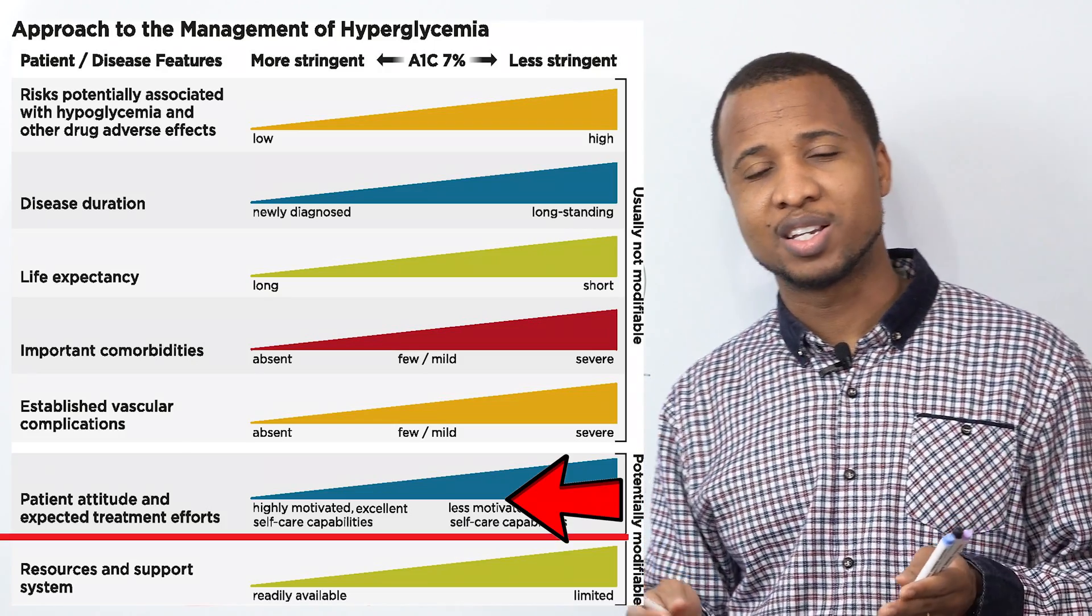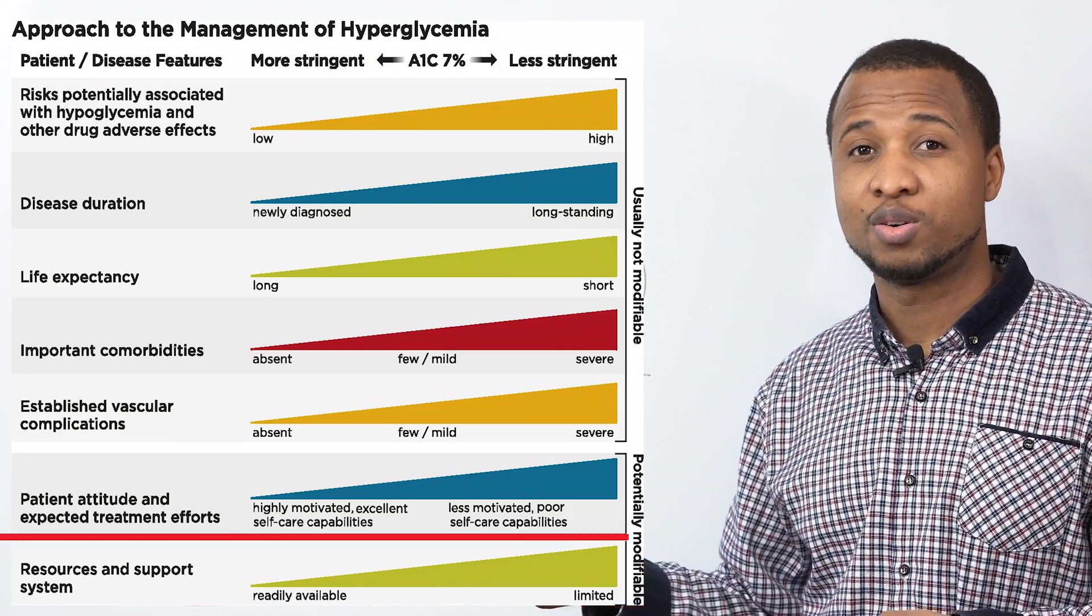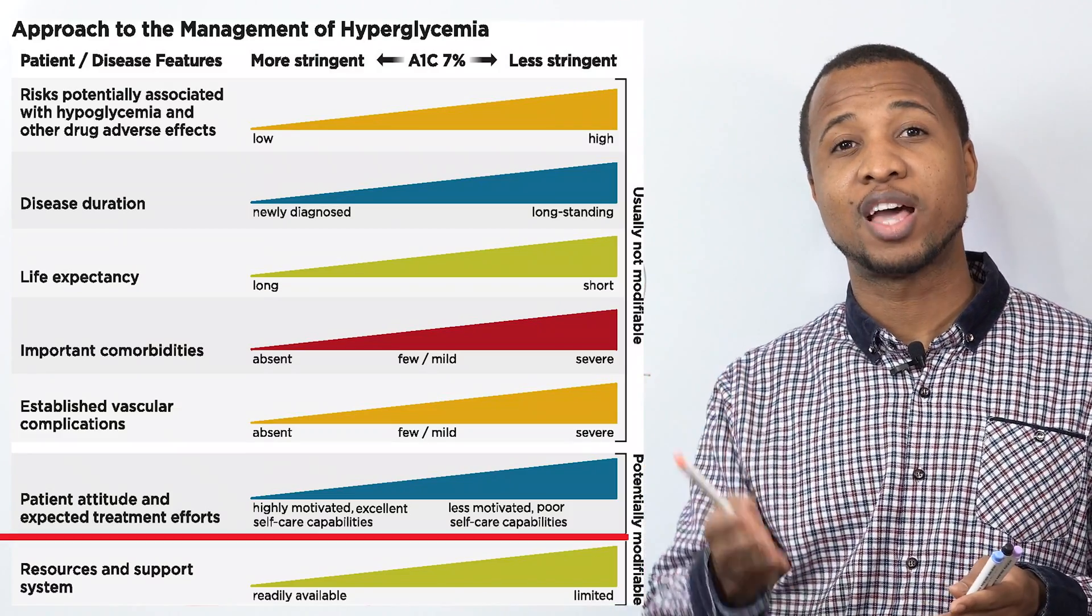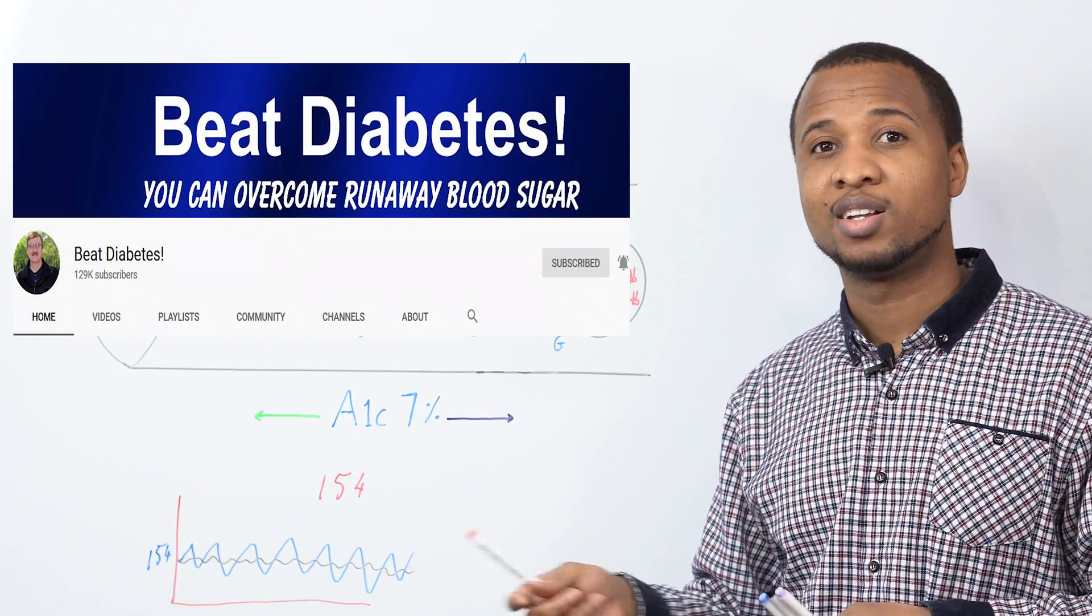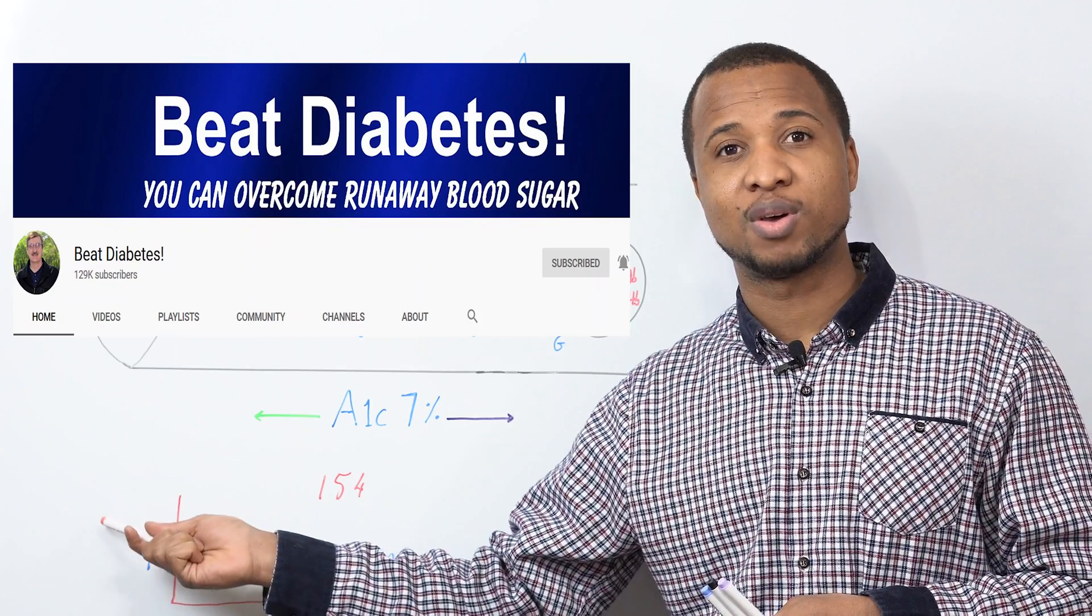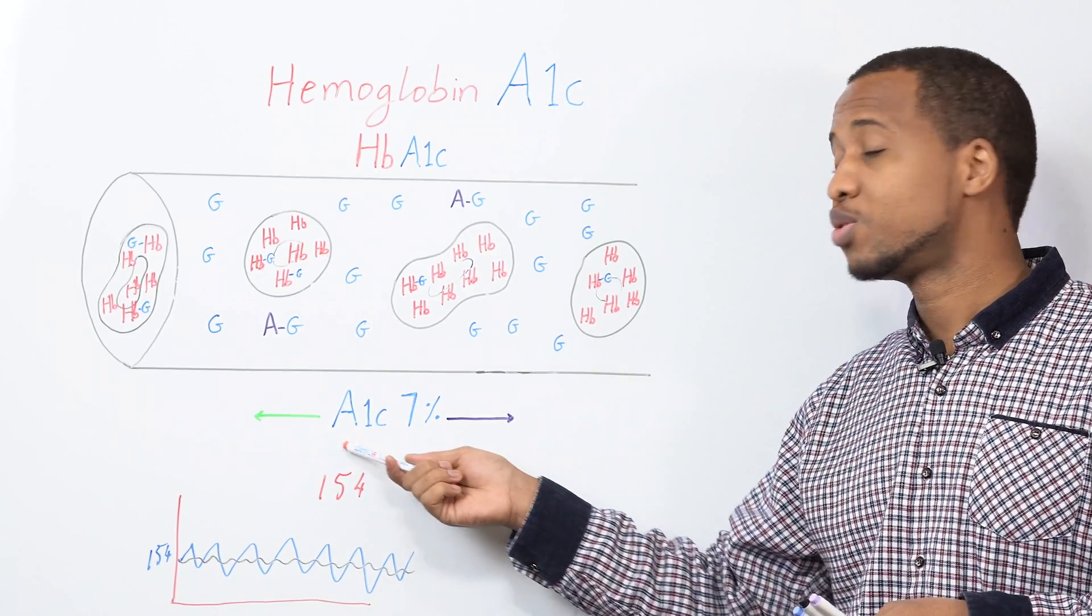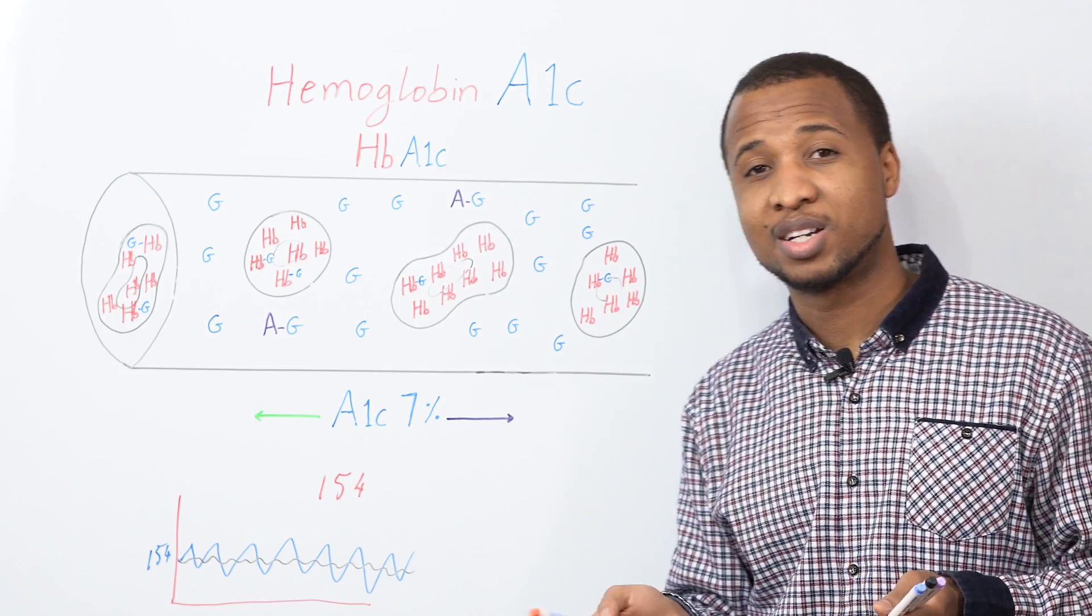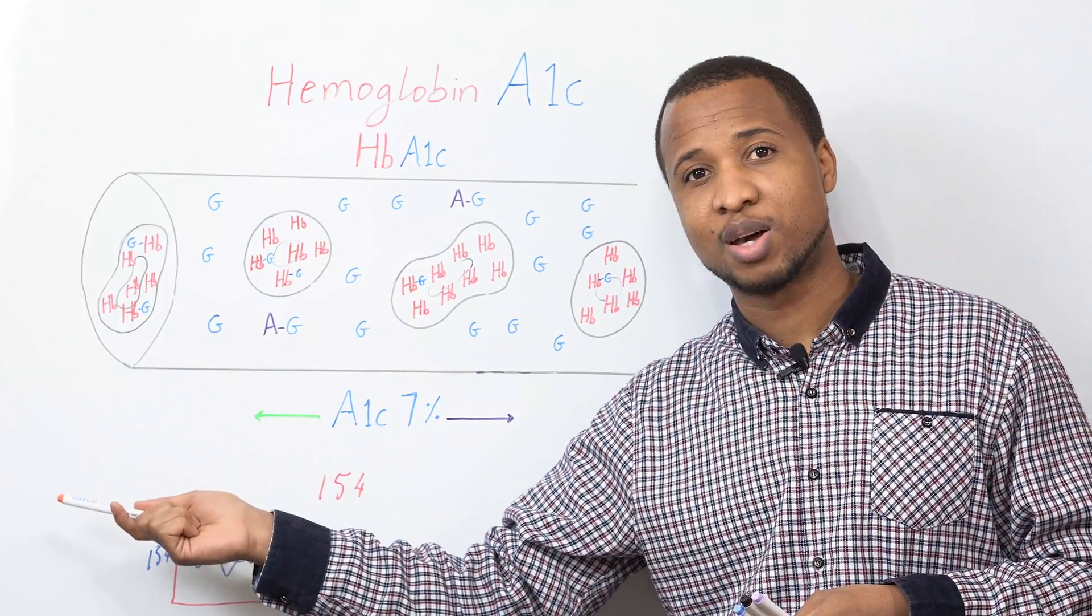And also, another very important thing is if patients can do it, like if they feel motivated to do it. For example, if you, for those that watch Beat Diabetes Channel, I know you are very motivated. Those can go this way. But some patients are not motivated. So it's safer to get a higher goal for them because they don't know what they're doing. But if you know and you're motivated, then this way is better.